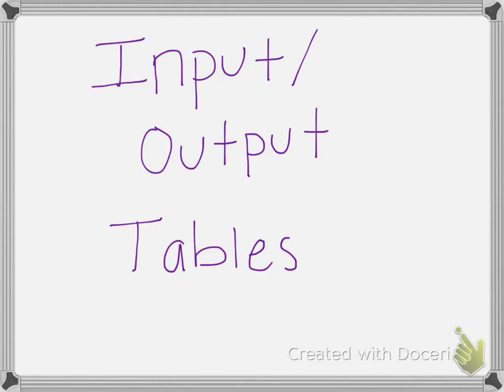Input-output tables show a pattern. You can think of it as something going in as the input, and then something happens to that number, and then something comes out as the output. Whenever we find the pattern in a table, we can write a rule to describe the pattern. The important thing to remember about the rules is they must work for each pair of numbers in the table.